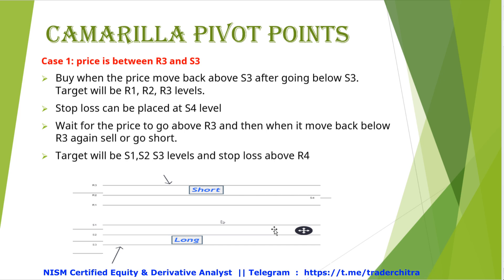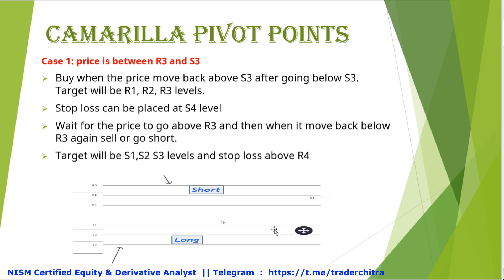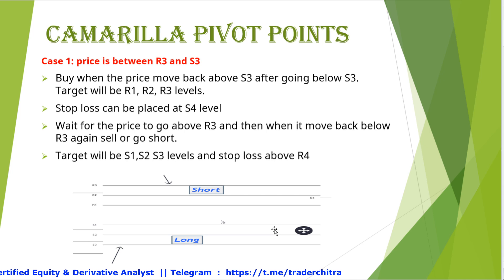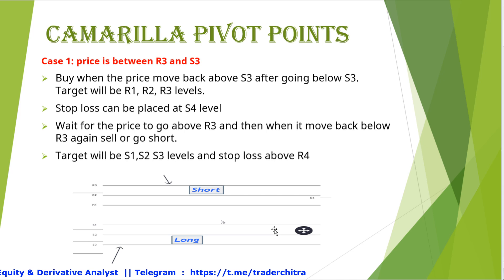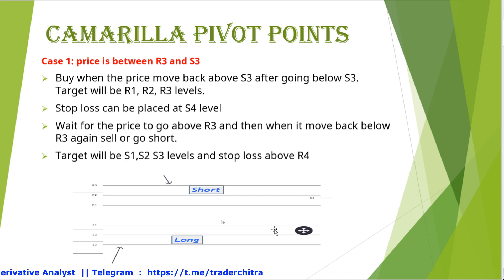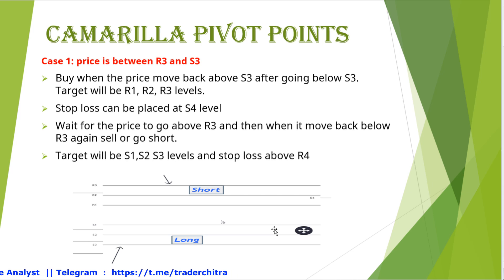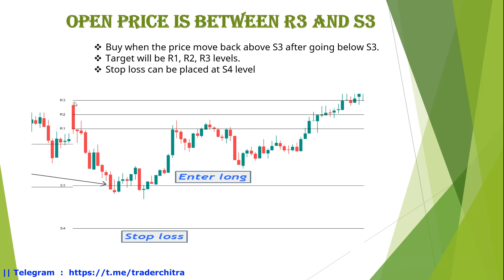How can we enter into the trade if the price is at R3? Wait for the price to go above R3, and after that, if we get a rejection from R3 — the market moves back below R3 — we can go for a short trade. The first target will be S1, S2, and S3 levels. The stop loss will be above R3, at the R4 level, which is the next resistance.